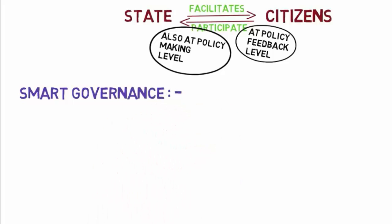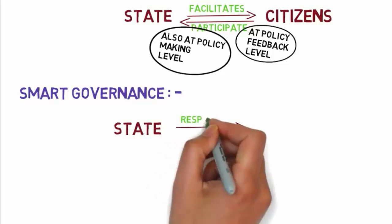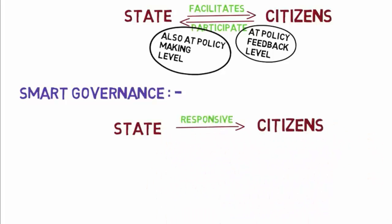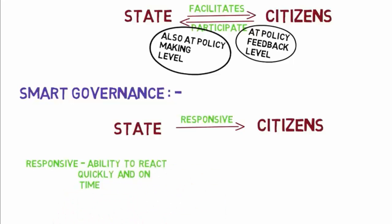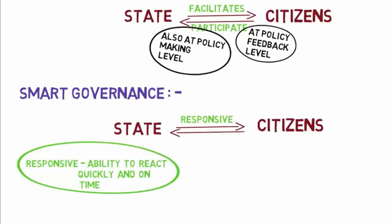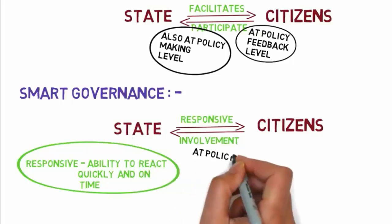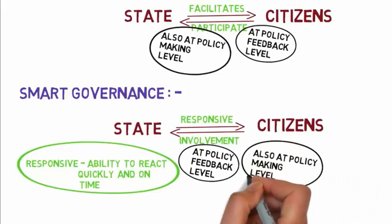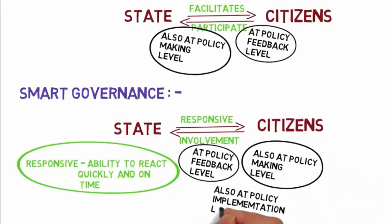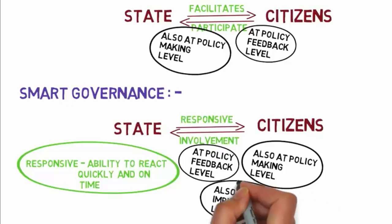The last type is smart governance, where a state is responsive towards citizens. Responsive means reacting quickly and positively — if you ask any question or make any query to the government, the response comes faster. In smart governance, there is citizen involvement at the policy feedback level, the policy making level, as well as the policy implementation level. This is the best type of governance.